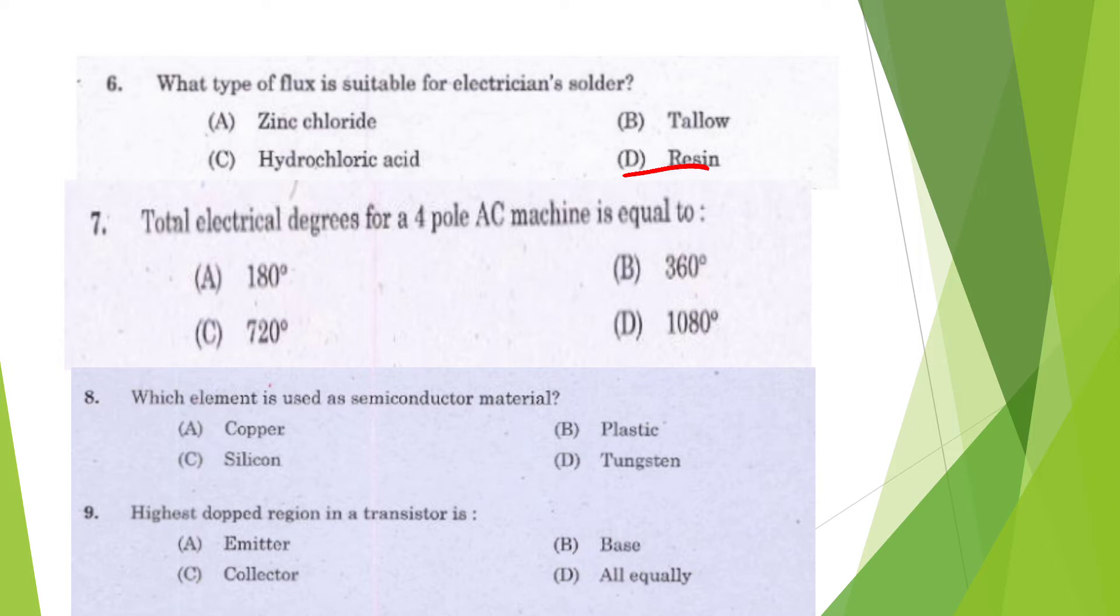Question 7: Total electrical degrees for 4 pole AC machine is equal to 180, 360, 720, or 1080? Two stator poles produce one cycle of power. Each pole contains 180 degrees electrical degree. In a 4-pole stator, we do 180 into 4, which is 720 electrical degrees in 360 mechanical degrees. Because one pole contains 180 electrical degrees, 4 poles is 180 into 4, that is 720.